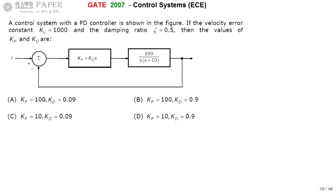Hello, we are discussing the GATE 2007 ECE paper. Look at a block diagram of a control system with a PD controller — a proportional-derivative controller — shown in the figure. If the velocity error constant KV is equal to 1000 and damping ratio zeta is equal to 0.5, then find the values of Kp and Kd.